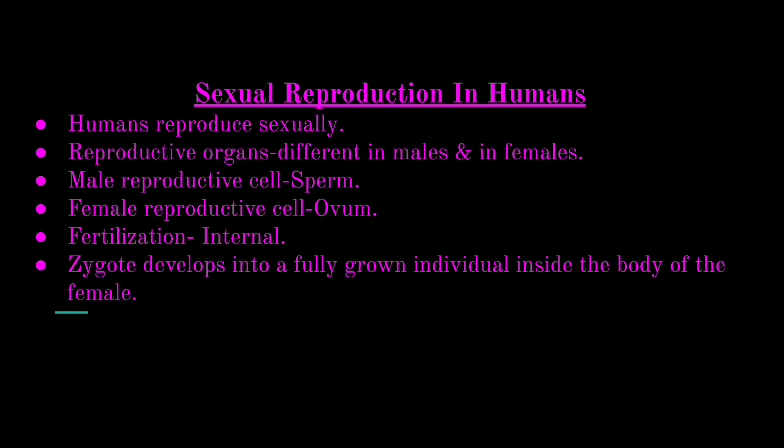Next, we come to sexual reproduction in humans. Humans reproduce sexually and there are different types of reproductive organs in males and females. The male reproductive cell is known as sperm and the female reproductive cell is known as ovum. Fertilization in human beings is internal, and the zygote develops into a fully grown individual inside the body of the female.